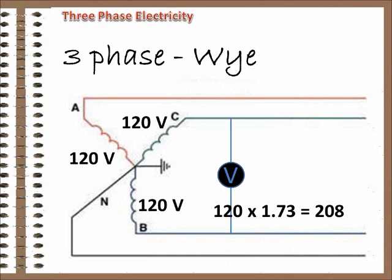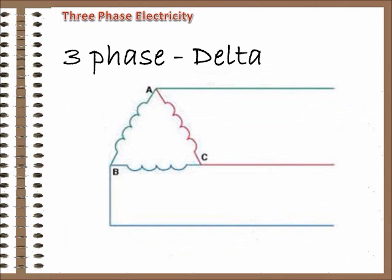The math works out to 1.73 times the voltage in one phase. So, connecting the three phases this way, Y, gives us 120, 208 service, or any proportional pairing, depending on the transformer ratio.